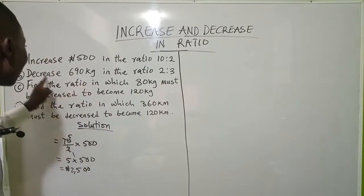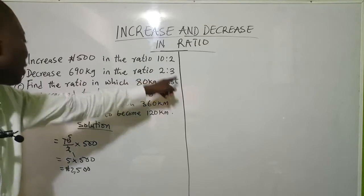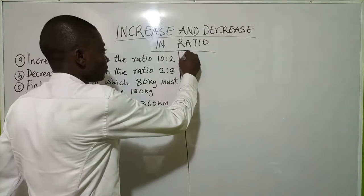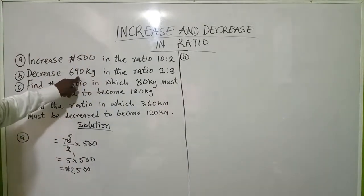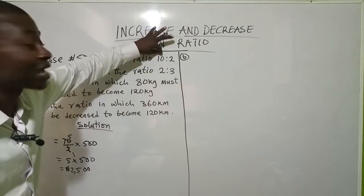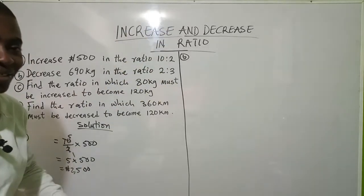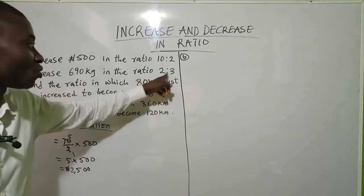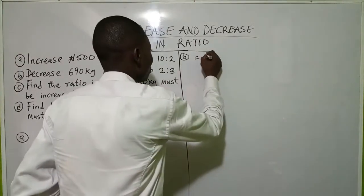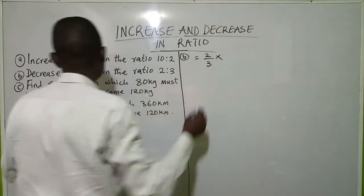Now the second question says: decrease 690 kg in the ratio 2:3. Let's take part B now. We want to do a decrease. When you are decreasing — remember we said when you are increasing, let the bigger ratio be on top — but this time when you are decreasing, the smaller ratio would be on top. Just the opposite of increase. So this will be the smaller ratio, which is 2, over 3, times whatever we are decreasing.